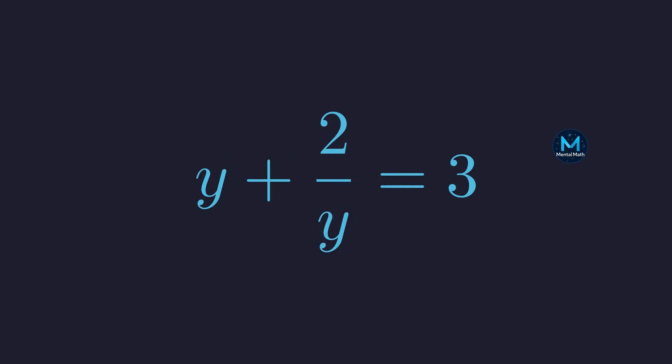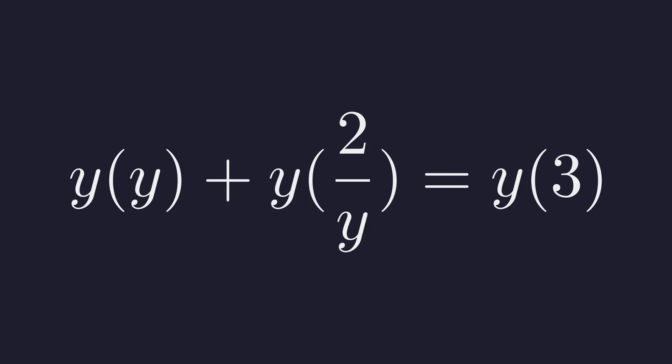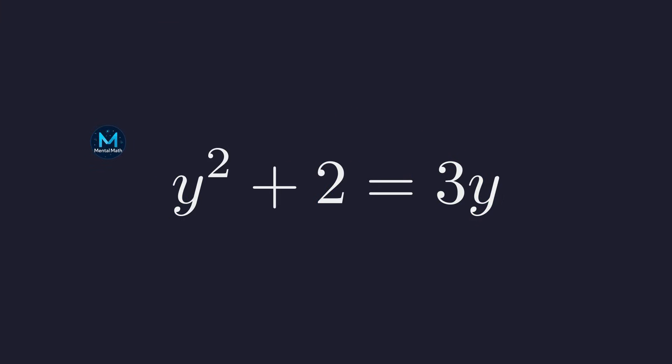To eliminate the fraction, our strategy is to multiply the entire equation by the denominator, which is y. Multiplying every single term by y gives us this expression. Now we simplify each term: y times y becomes y squared, the y in the second term cancel, and y times 3 becomes 3y. The result is a clean quadratic equation.